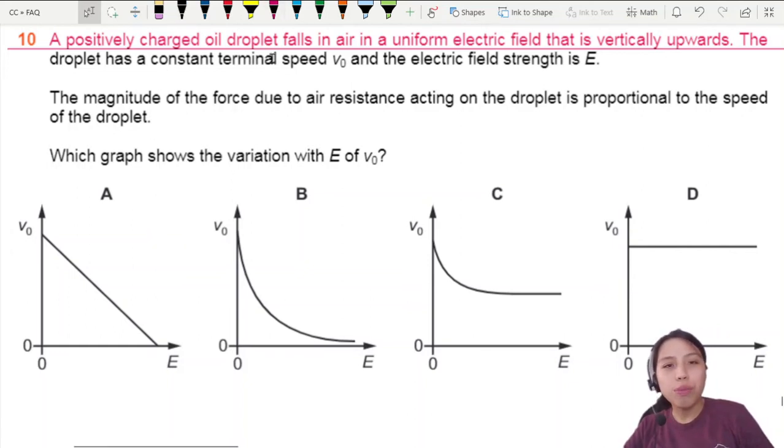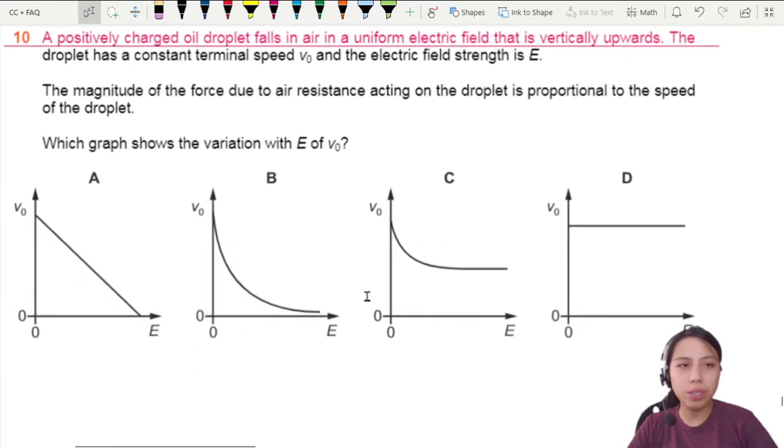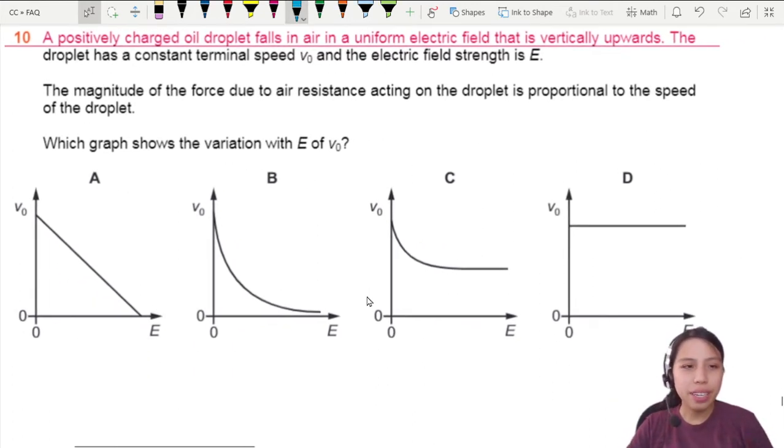A positively charged oil droplet falls in air in a uniform field that is vertically upward. The droplet has a constant terminal speed and electric field strength E. I'm going to draw some things here to help me think a little bit better about what's happening. So I have electric field pointing up, and I have an oil drop right there on the side.